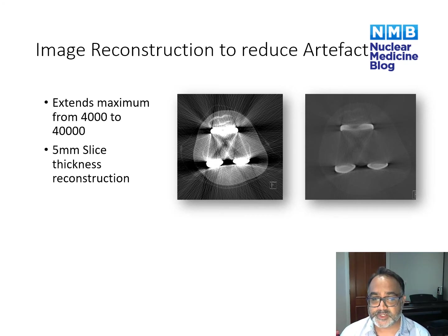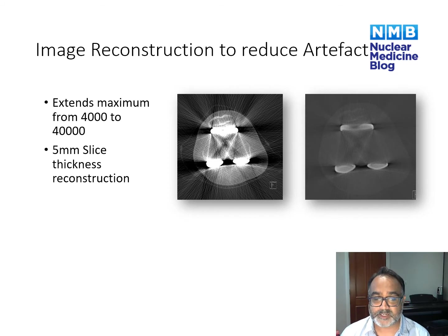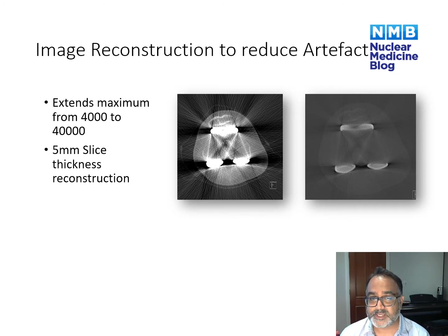One of the challenges when performing SPECT CT images with metalwork is overcoming the artifact from the metal. As you can see on the image on the left, there is often quite significant streak artifact from the metal in the prosthesis. If you don't have metal artifact reduction software, one way of overcoming this is to use extended Hounsfield scale, which extends the maximum from 4,000 up to 40,000 Hounsfield units. The image on the right uses the extended Hounsfield scale windowed at a much higher threshold, so you can see the metalwork much more clearly.